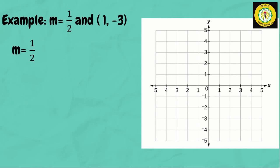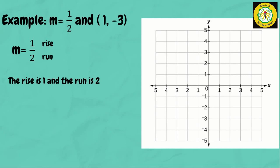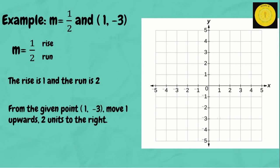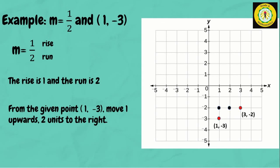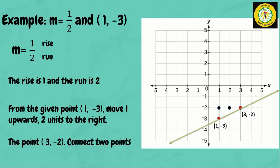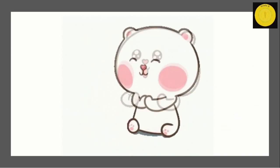Last example: the slope is one-half and the point is (1, negative 3). The rise is 1 and the run is 2. From the given point (1, negative 3), move 1 unit upward and 2 units to the right. The other point is (3, negative 2). Connect the two points with a straight line.